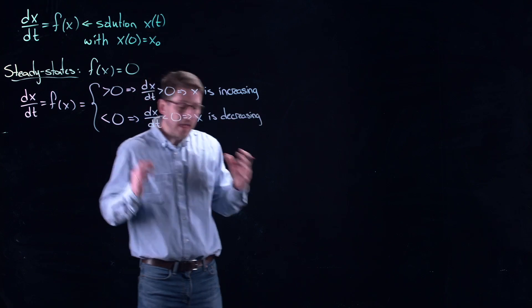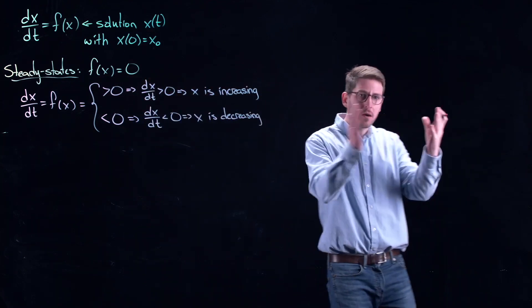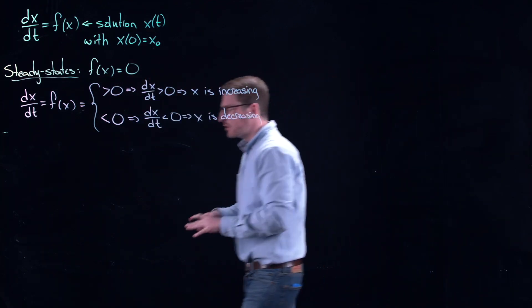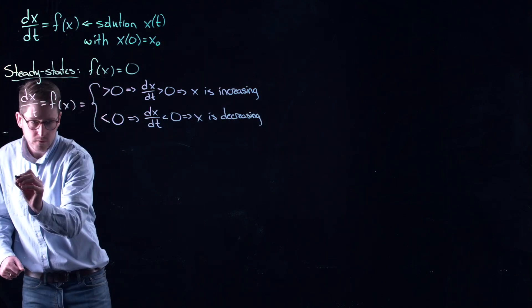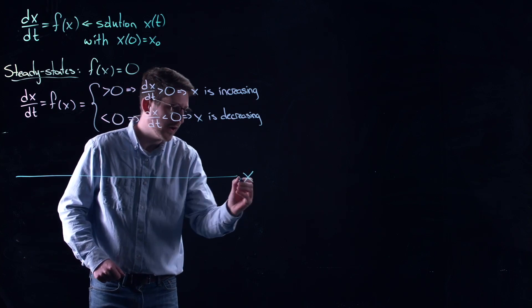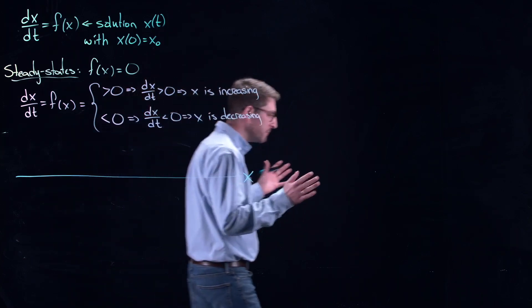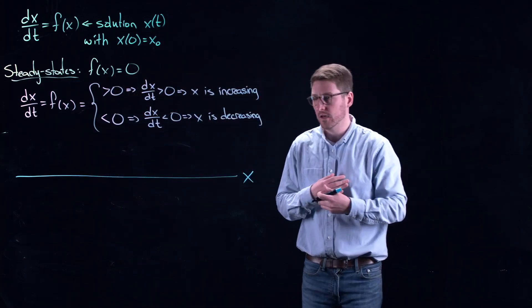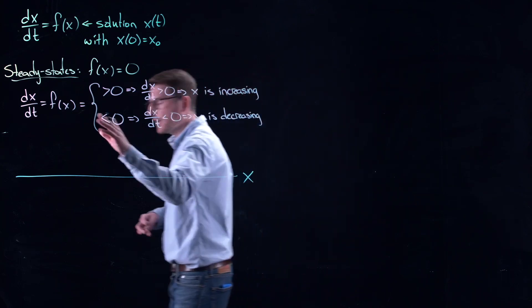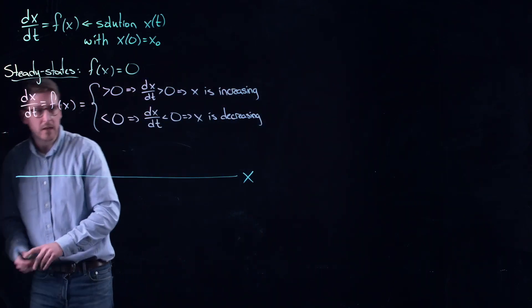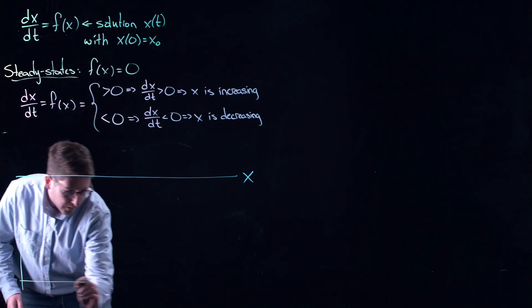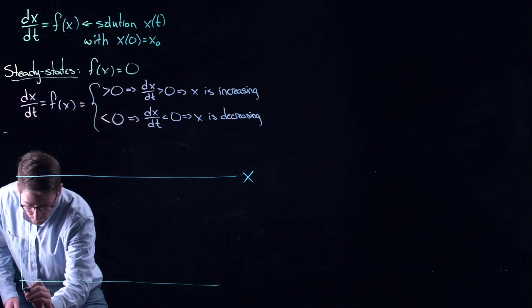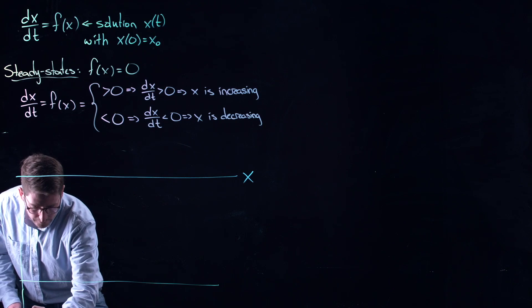And then I can unify this with a geometric perspective. So I can think of all of the possible values of x existing on a line. I am hiding the time dynamics behind this thing. Now because my function f is a one dimensional function, I could sketch it out. So let me do that down here.